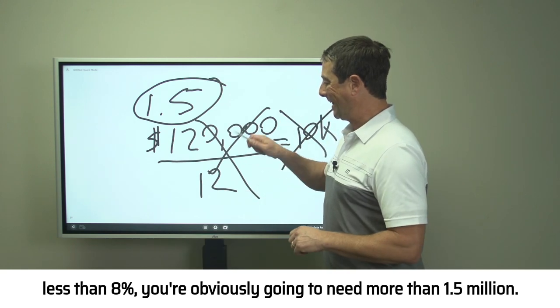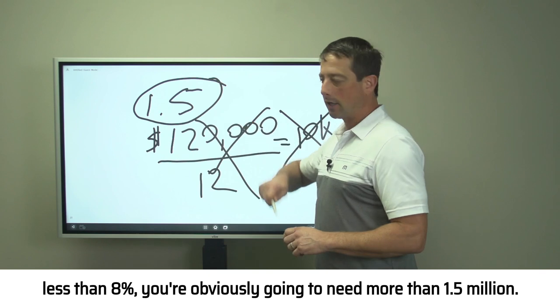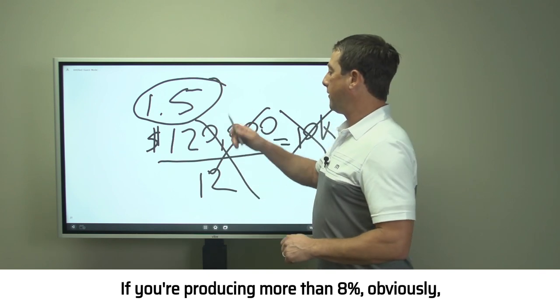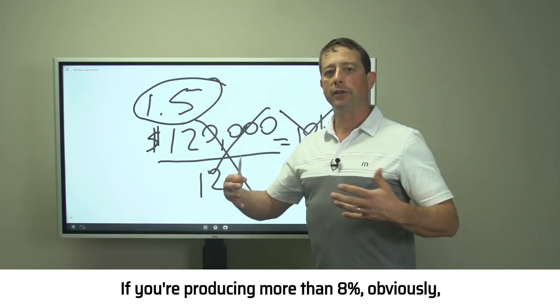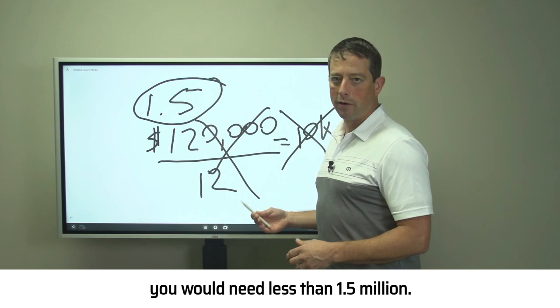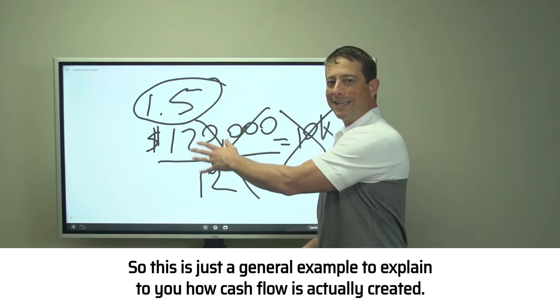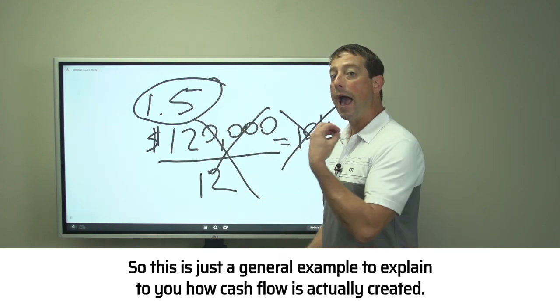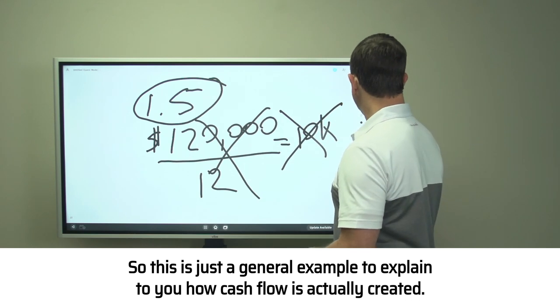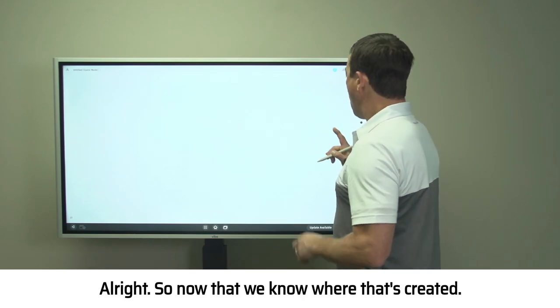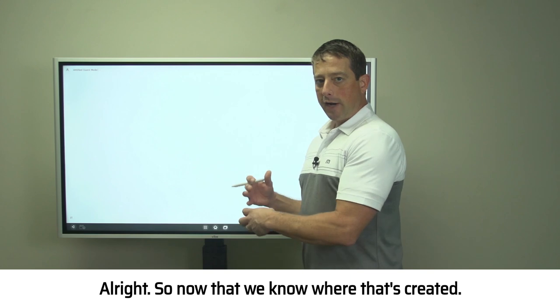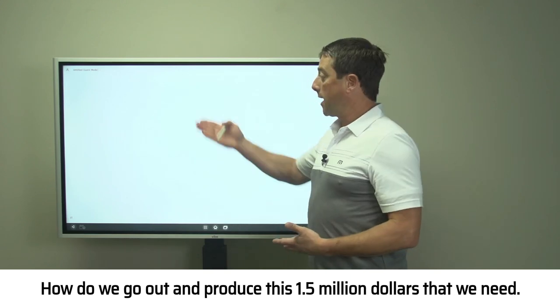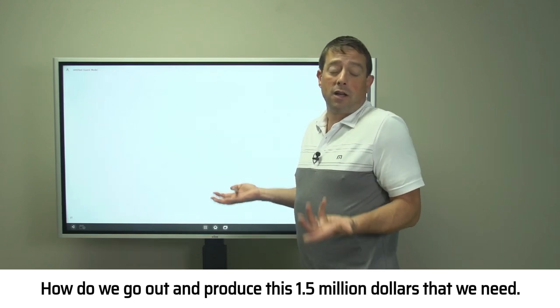That's why I've come up with these numbers. If you're producing less than 8%, you're obviously going to need more than 1.5 million. If you're producing more than 8%, you would need less. This is just a general example to explain how cash flow is actually created. Now that we know where that's created, how do we go out and produce this 1.5 million dollars?